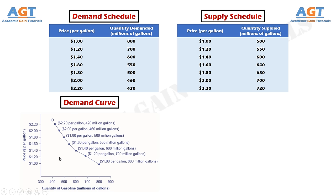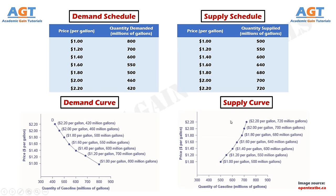Nearly all demand curves share the fundamental similarity that they slope down from left to right. Similarly, the supply curve is a line that shows the relationship between price and quantity supplied on a graph, with quantity supplied on the horizontal axis and price on the vertical axis. This is a supply curve plotted from the supply schedule, with supply quantity of gasoline on the horizontal axis and price per gallon along the vertical axis. The shape of supply curves will vary — steeper, flatter, straighter, or curved — but nearly all supply curves slope up from left to right and illustrate the law of supply.